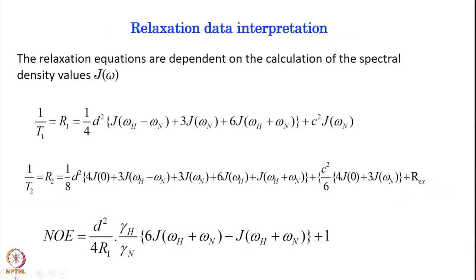Relaxation equations are dependent on the calculation of a spectral density function J(ω), which we discussed in the first class. The spectral density at any frequency omega encodes T1, T2, and NOE. For R1, it depends upon the spectral density function at the proton frequency J(ωH), the nitrogen frequency J(ωN), and so on.